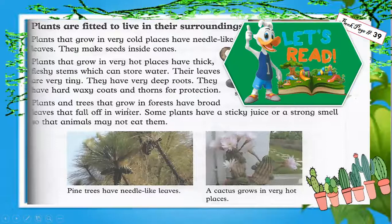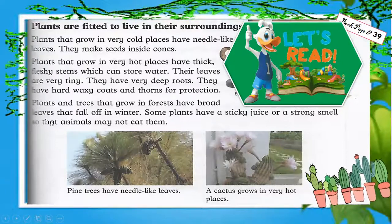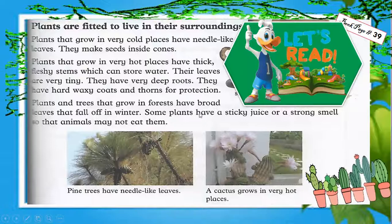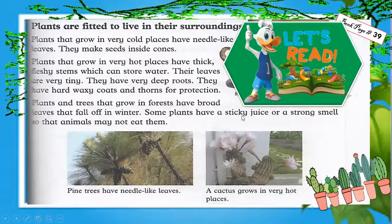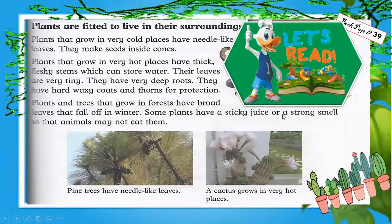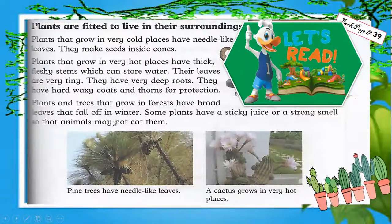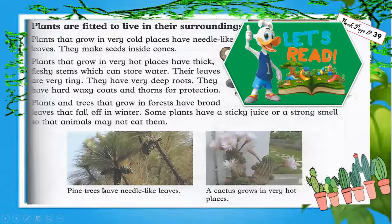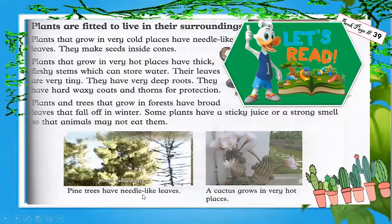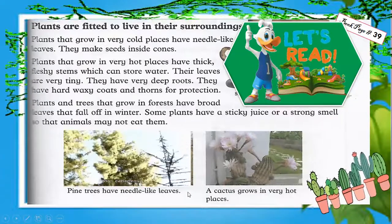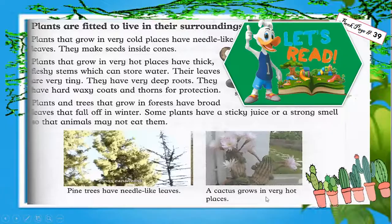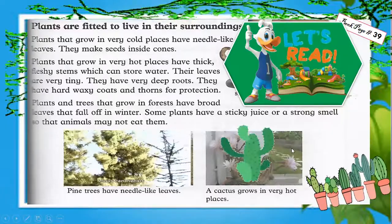Plants and trees that grow in forests have broad leaves that fall off in winter. Some plants have a sticky juice or a strong smell so that animals may not eat them. Pine trees have needle-like leaves, while a cactus grows in very hot places.